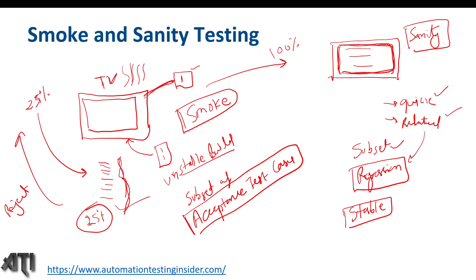Smoke testing is mainly scripted because these are part of acceptance test cases — we retrieve some of the test cases from the acceptance test plan and it is mostly automated or scripted. Sanity tests are not automated or scripted; we will randomly check some quick functionality and do some related testing.